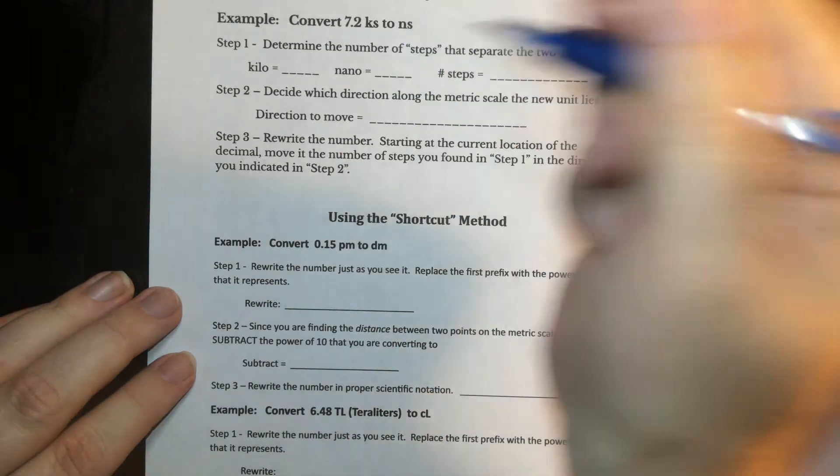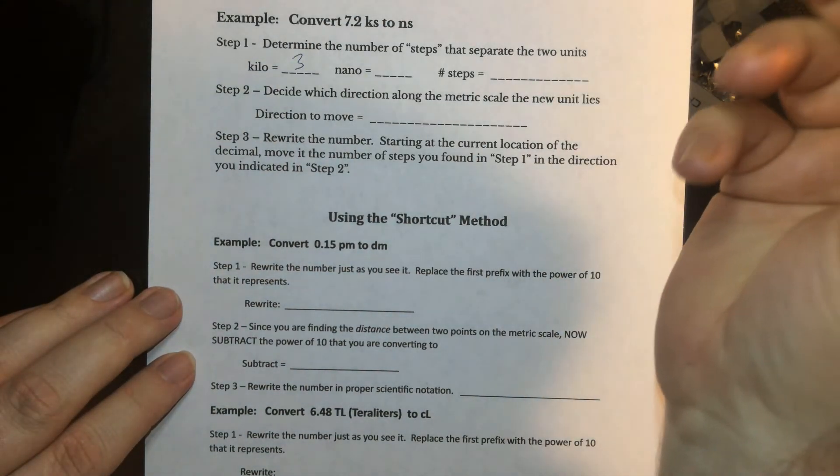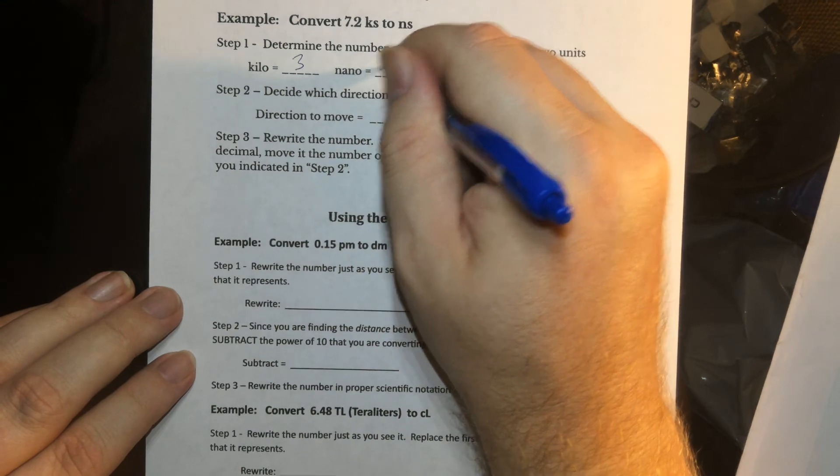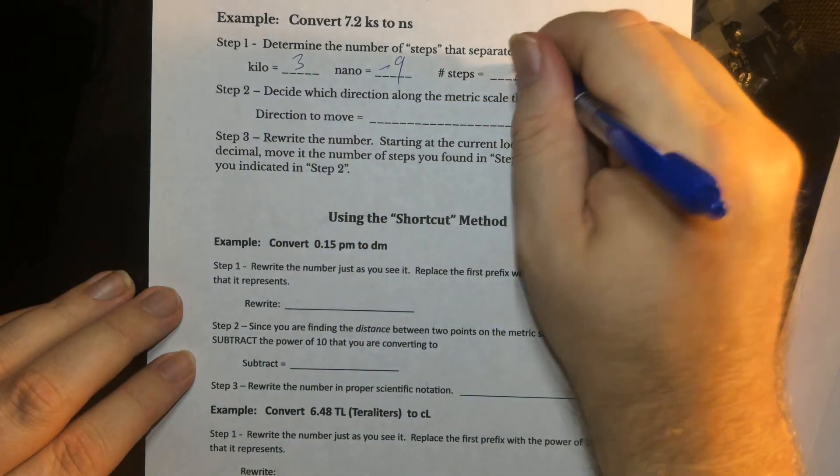All right, now that you've tried it, you've got kilo to nano. Kilo is 10 to the third. Nano is 10 to the minus nine. So track those two to get your number of steps. That's 12 steps.